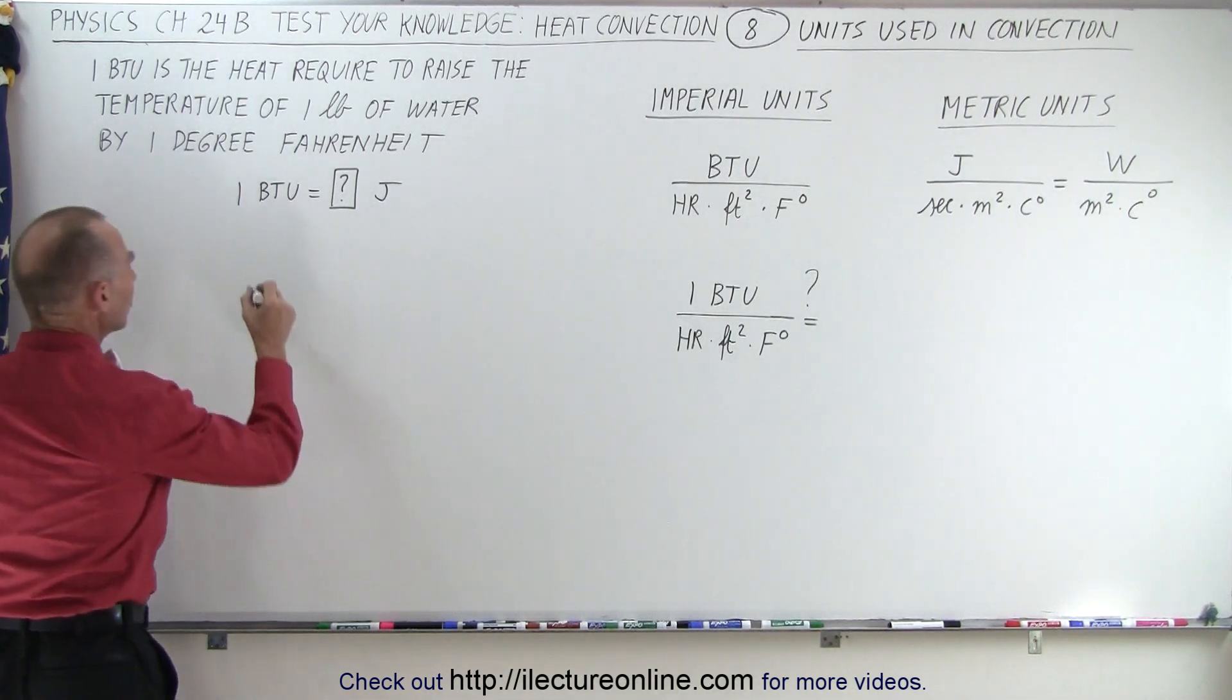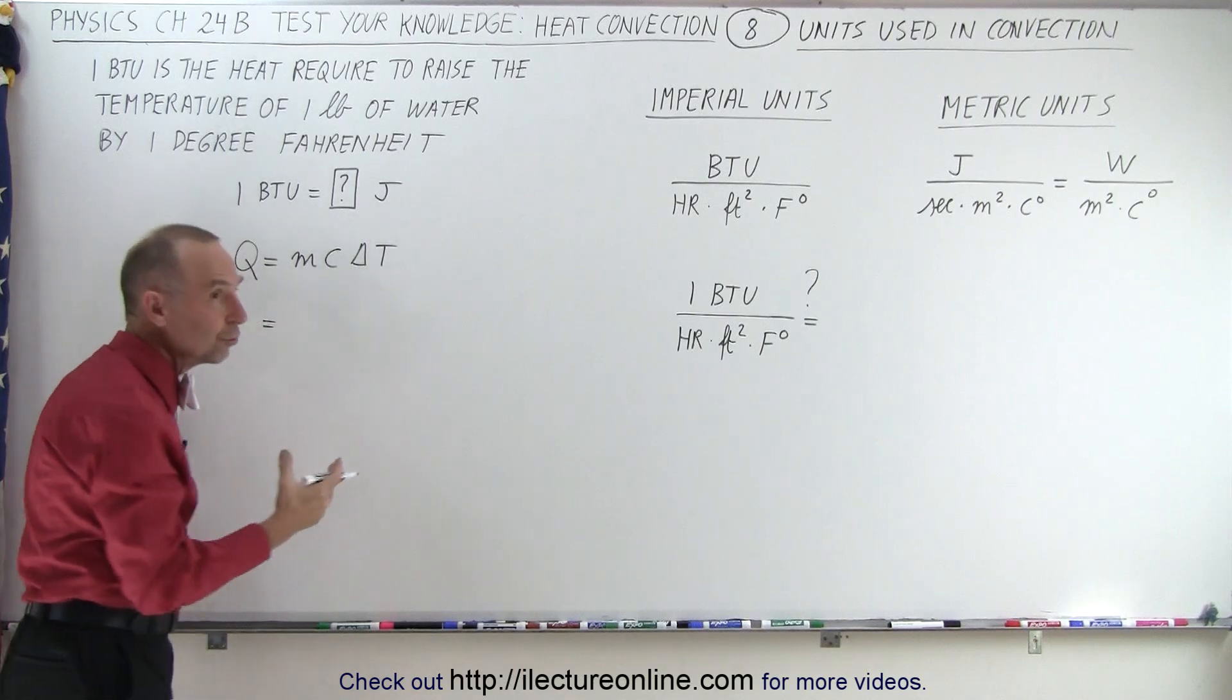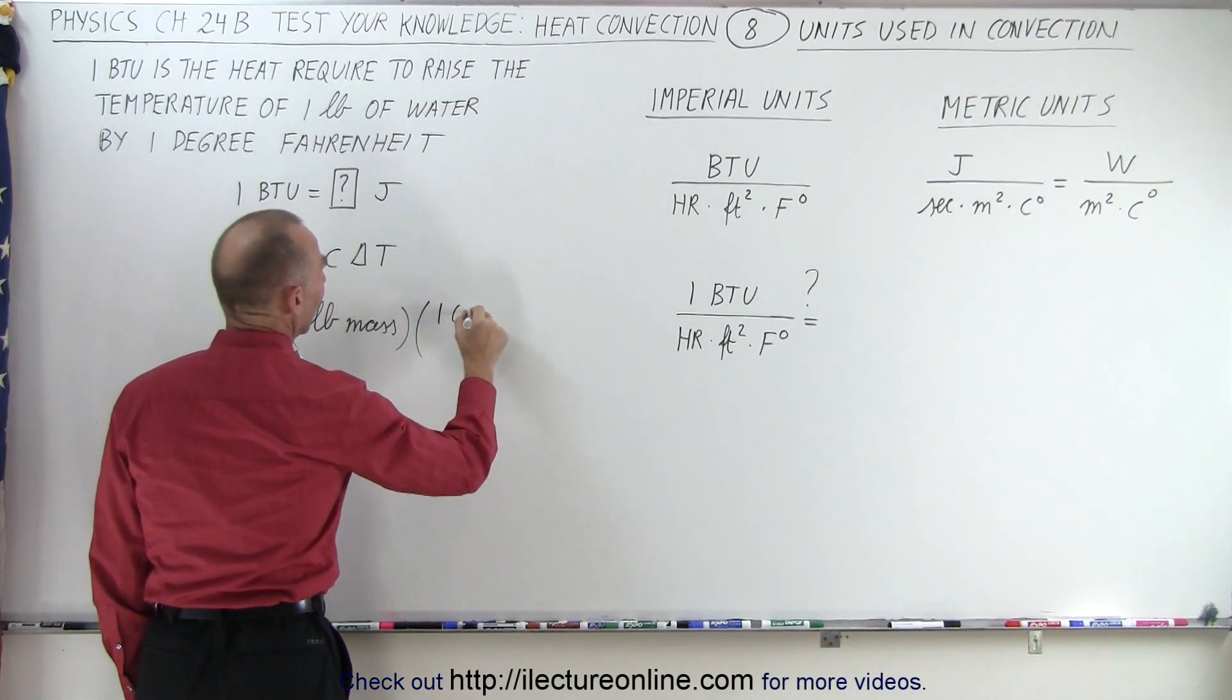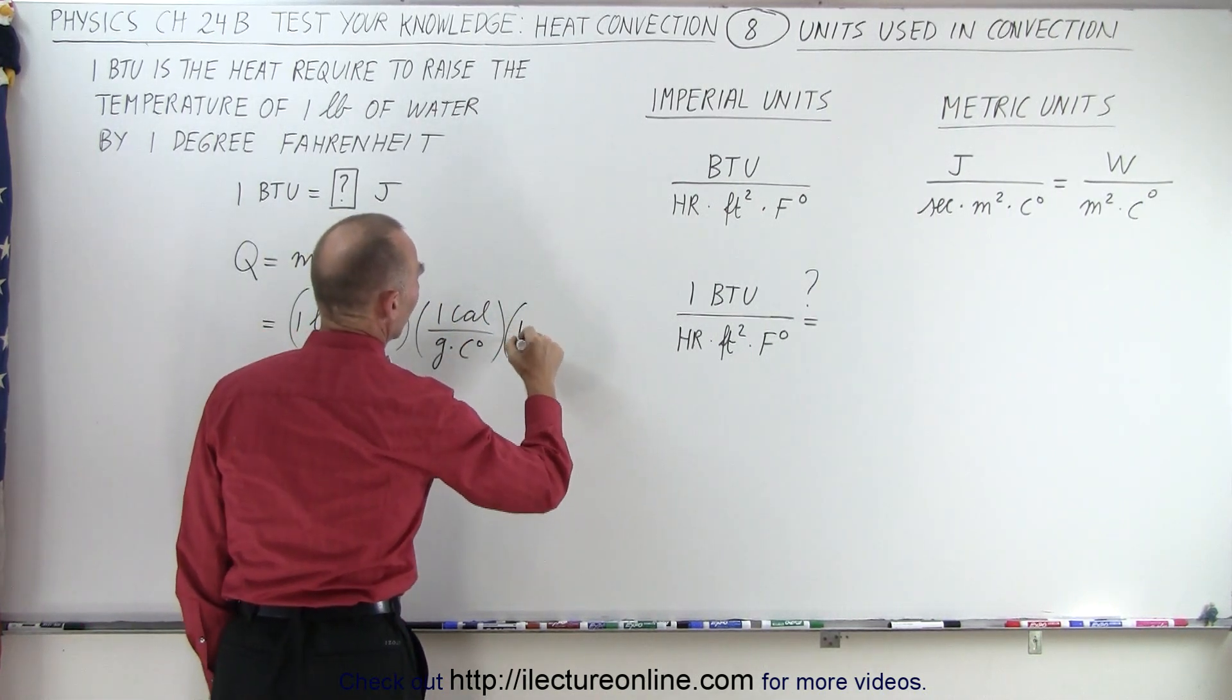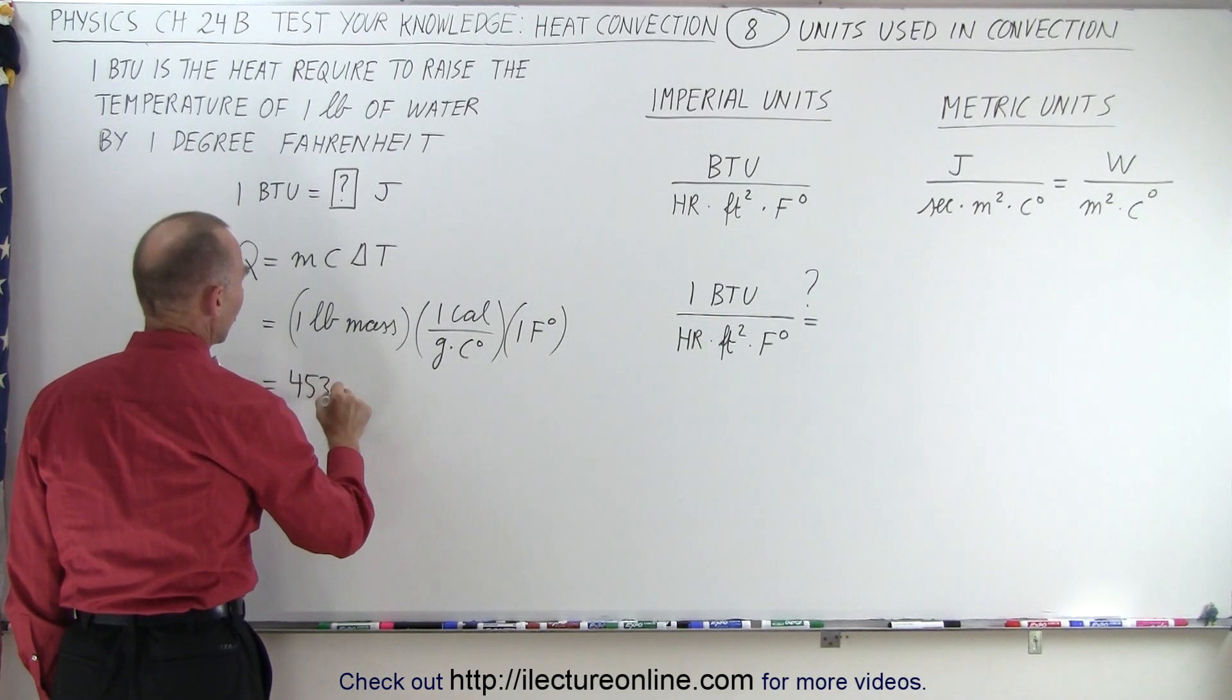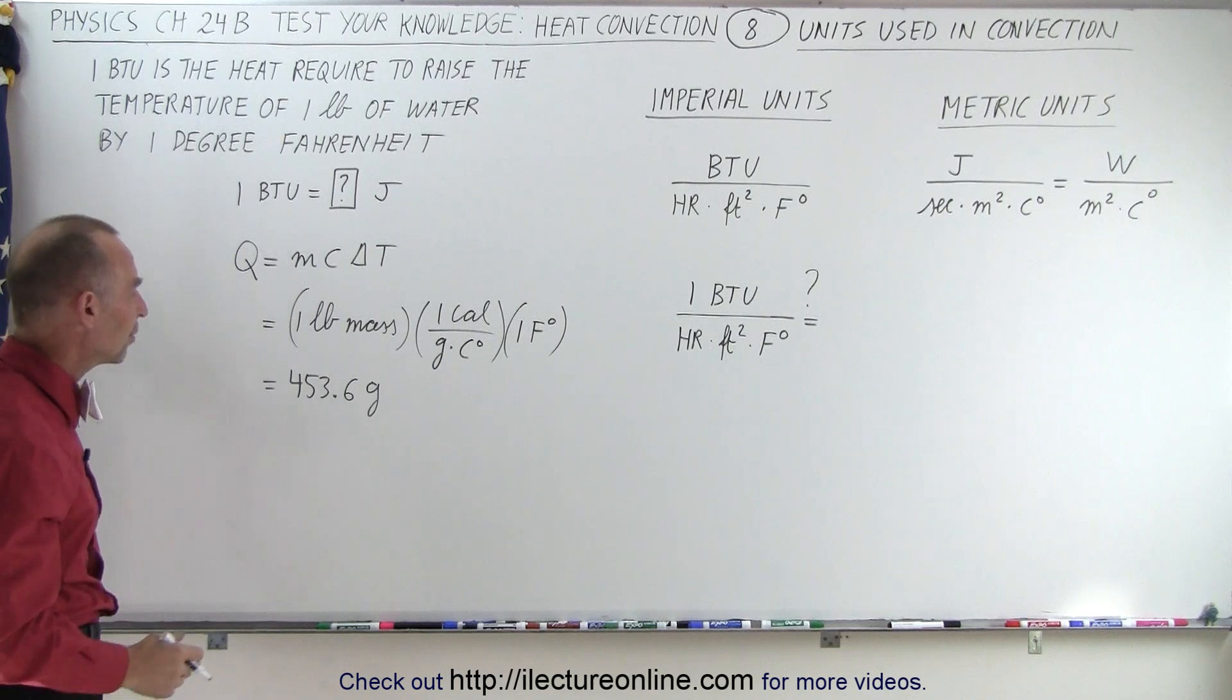To find out what the BTU is, we can use the equation q equals mc delta t. The mass is going to be one pound mass equivalent. For C we could use one calorie per gram per centigrade degree, and the delta temperature is one Fahrenheit degree. Now we have to convert that to metric units. So a pound mass is about 453.6 grams.